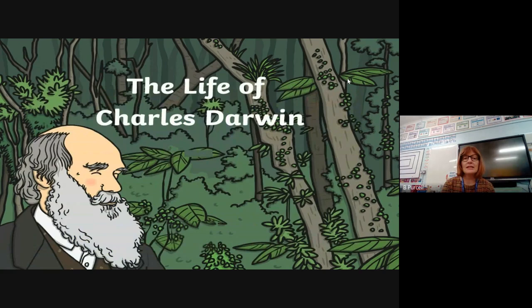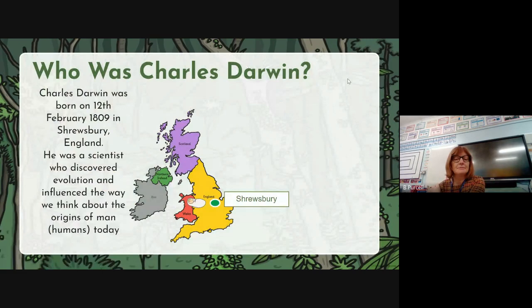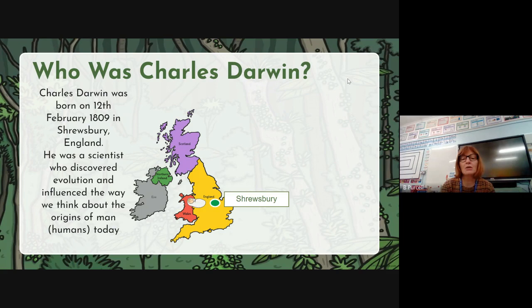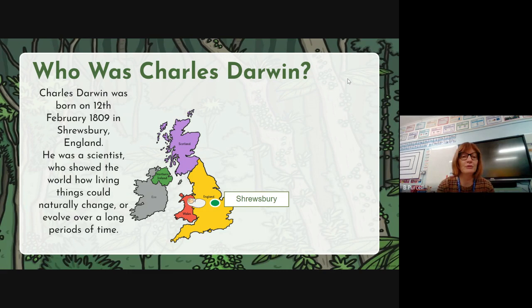Let's have a look. I've got an introductory page that says 'The Life of Charles Darwin.' This is what my first page looked like last week — it said 'Who was Charles Darwin?' I have a map of the UK with the location of his birth marked. My introduction says: 'Charles Darwin was born the 12th of February 1809, in Shrewsbury, England. He was a scientist who discovered evolution and influenced the way we think about the origins of humans today.' That's a good, simple introduction — you don't want too much information in your introduction, otherwise your biography won't flow.